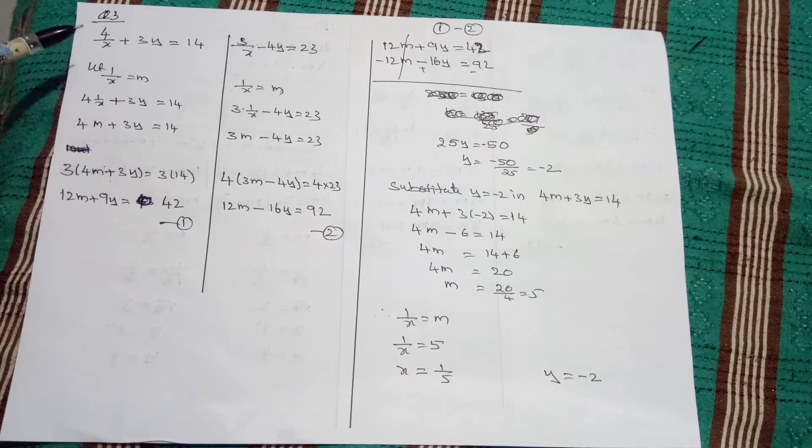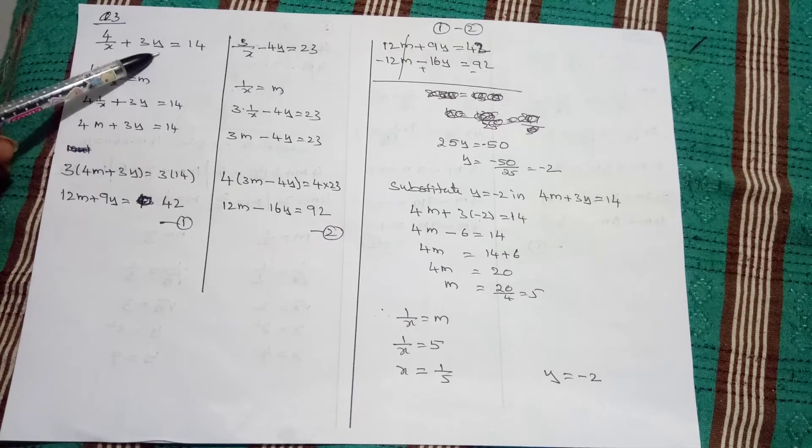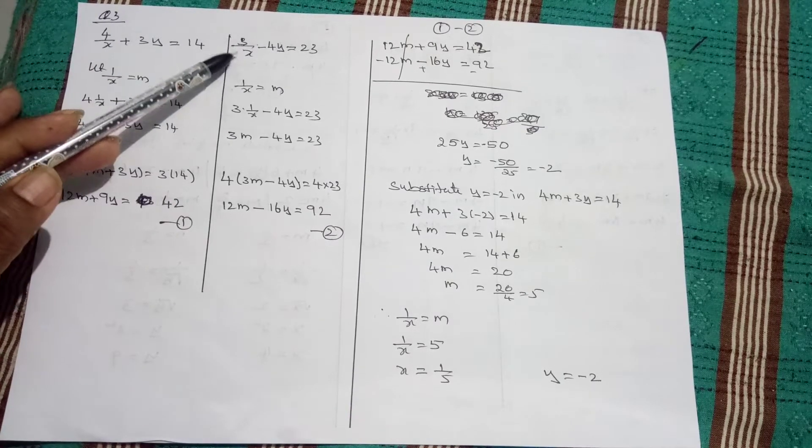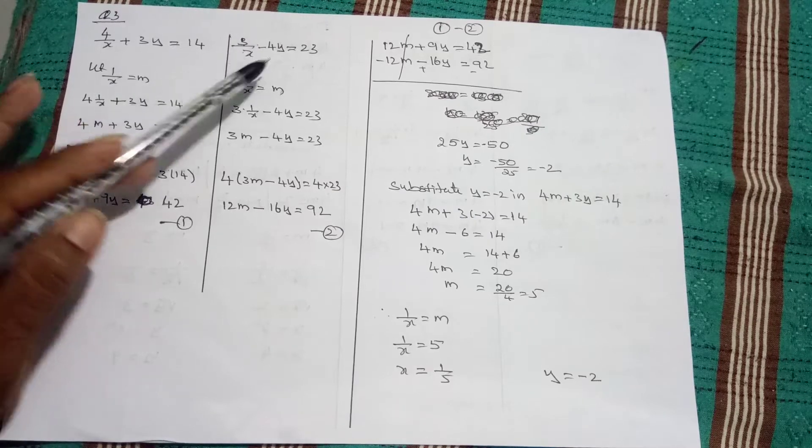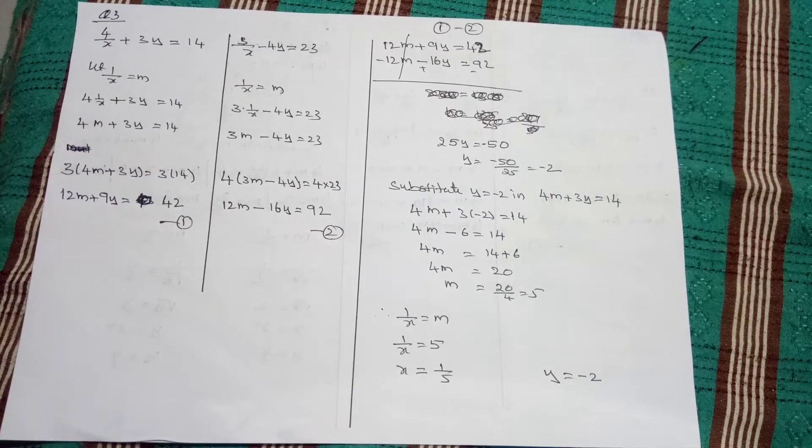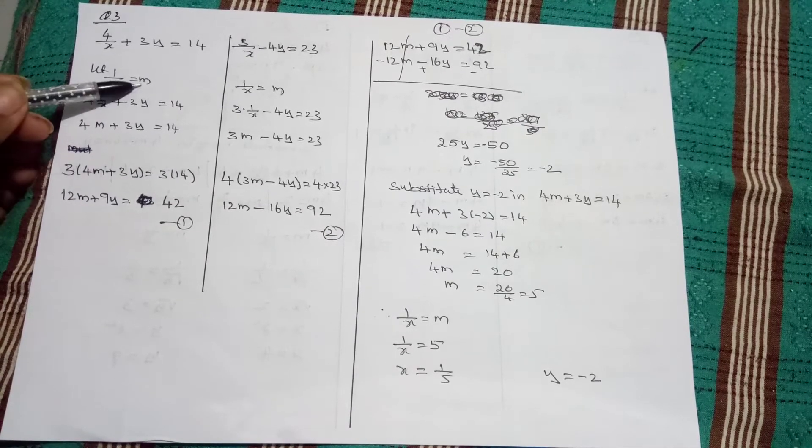Here, one variable is in the denominator, one is normal, 3y. The same x is in the denominator, one is normal. So, I want to take 1 by x equals m.